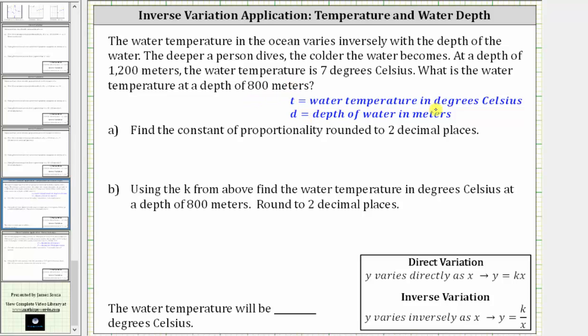Let's let T equal the water temperature in degrees Celsius and D equal the depth of the water in meters. Because we're told the water temperature in the ocean varies inversely with the depth of the water, we can also say that T varies inversely with D, which means we have inverse variation.